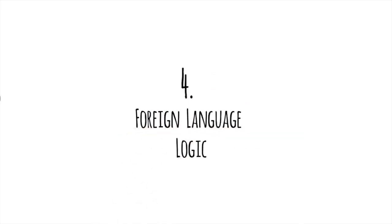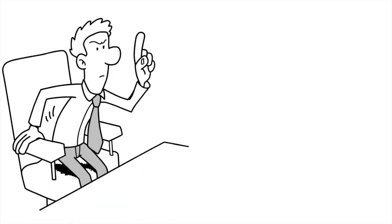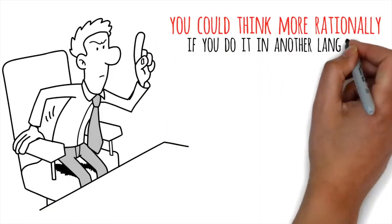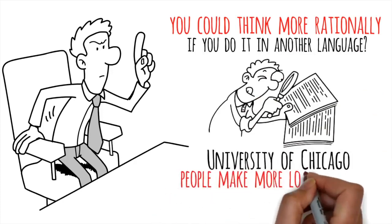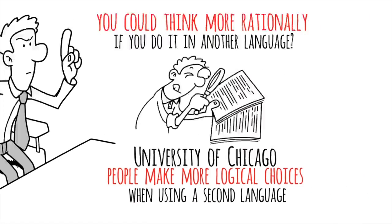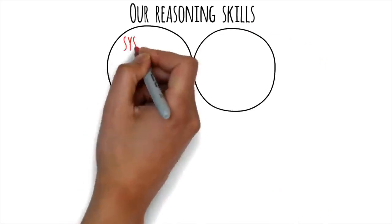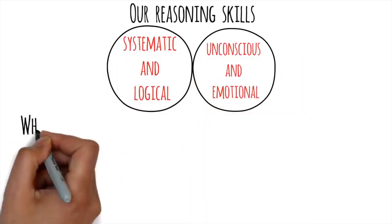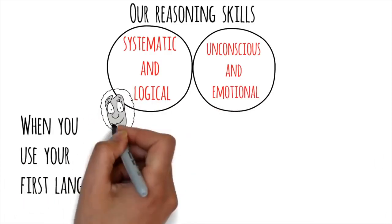Number 4. Foreign language logic. We all make bad decisions, but what if I told you that you could think more rationally if you do it in another language? A study from the University of Chicago found that people make more logical choices when using a second language. Our reasoning skills are divided into two parts. One is systematic and logical, while the other is unconscious and emotional.